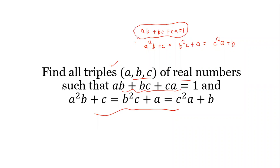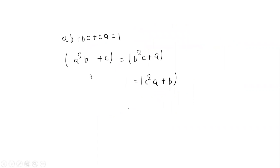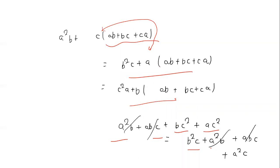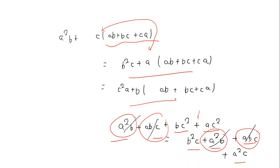We let AB plus BC plus CA equal Y. In A squared times (B plus C), we can write the 1 in place of AB plus BC plus CA, substituting it into the expression. So we substitute that here to get A squared plus B squared terms.